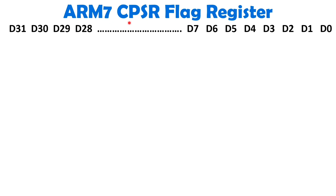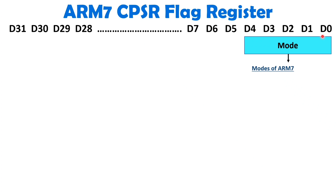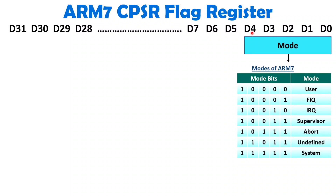With ARM7's CPSR register, we have a total of 32 bits. As shown, bits D0 to D31 hold the status of the program. The first 5 bits, D0 to D4, hold data regarding which mode ARM7 is functioning in. There are a total of 7 different operating modes with ARM7.